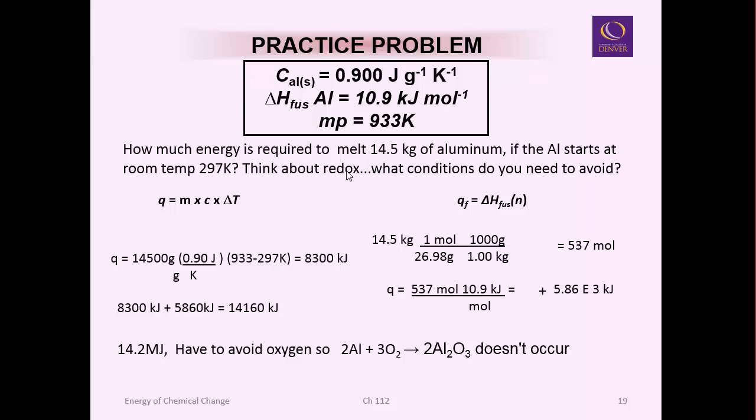And just one other comment is, what conditions do you need to avoid? Well, if you started heating aluminum in the room, it would react with oxygen and make aluminum oxide. So you'd have to put this under some sort of inert atmosphere in order for this reaction to really happen. So this basically is how you calculate the energy for physical change. I hope this helps you understand that concept.